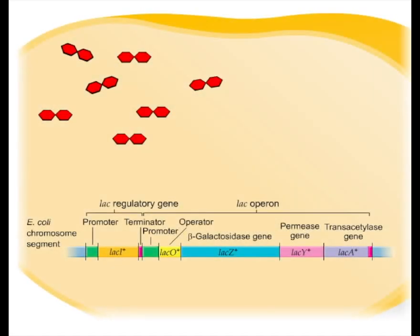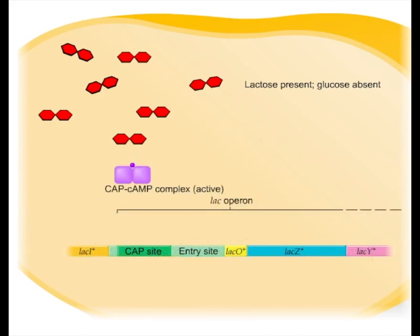In the presence of lactose and the absence of glucose, cyclic AMP accumulates and joins with a receptor protein called the catabolite activator protein, CAP.